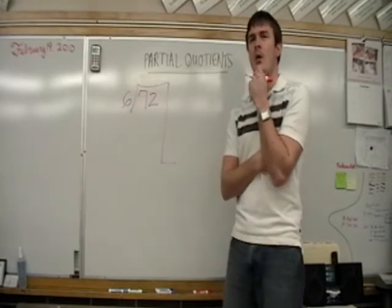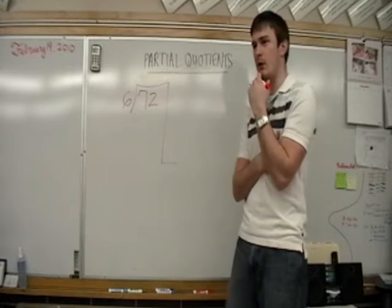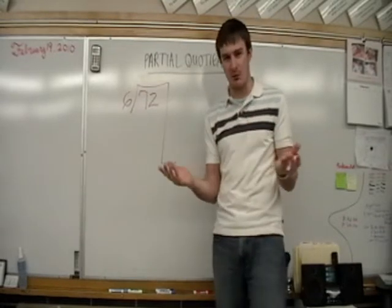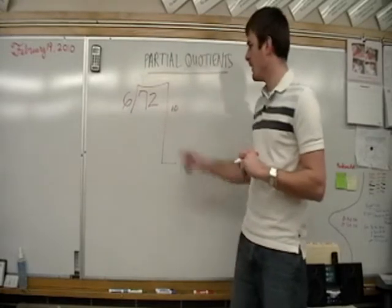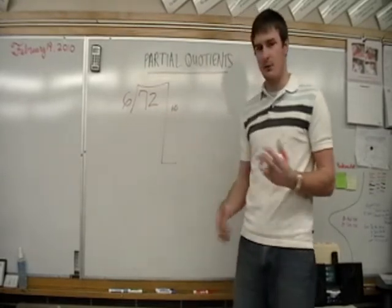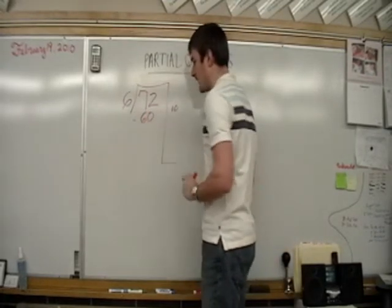So let's think about this. How many 6s would go in there? Well, I know 6 times 10 is 60, so that might work. 6 times 100 is 600, so that's way too many. So we'll go with 10. I'm going to write my 10 over in this area. So 6 times 10, or 6 groups of 10, or 10 groups of 60, is going to give you 60.